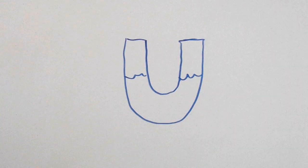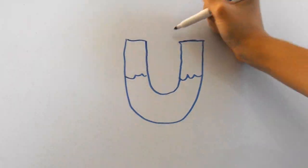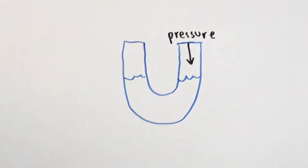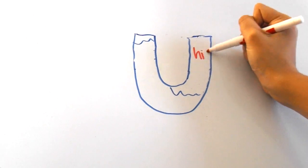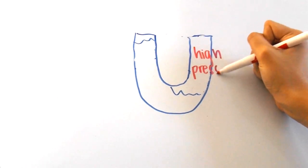So here, I've drawn a U-shaped container filled halfway with water. Now I'm going to apply pressure to one side. Naturally, the water would move to the other side of the container since the right side now has a higher pressure causing the water to move the opposite direction.